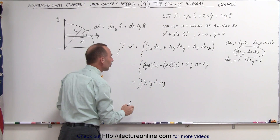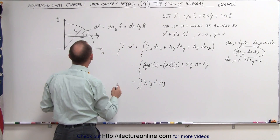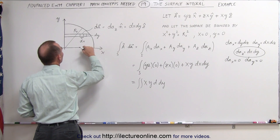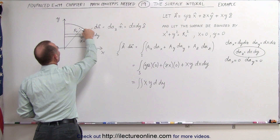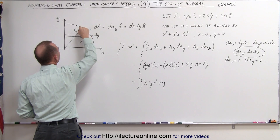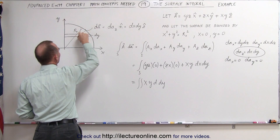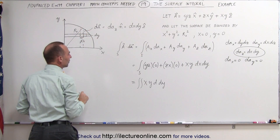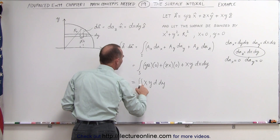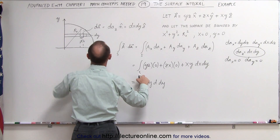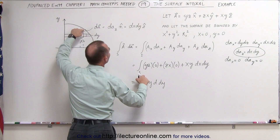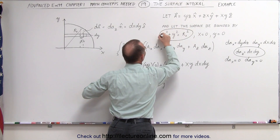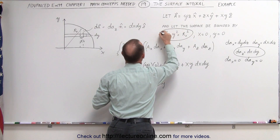That now becomes a double integral — we integrate over x and y. This is equal to a double integral of x times y dx dy. We'll first integrate in the y direction, integrating from y equals 0 to y equals a point on the curve. The upper limit of integration is where we hit the curve, so we take the equation of that curve and solve for y.